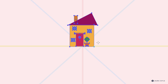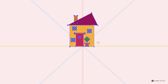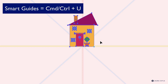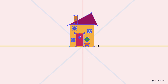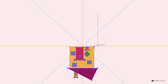You might have noticed I have Smart Guides on, and that can really help if you want to use a path or anchor point to get accurate when setting your reference point. To turn on Smart Guides, use the keyboard shortcut Cmd/Ctrl+U — this toggles it off and on. When you hover, you can see that little indicator; click to set your point accurately, then Shift-drag.